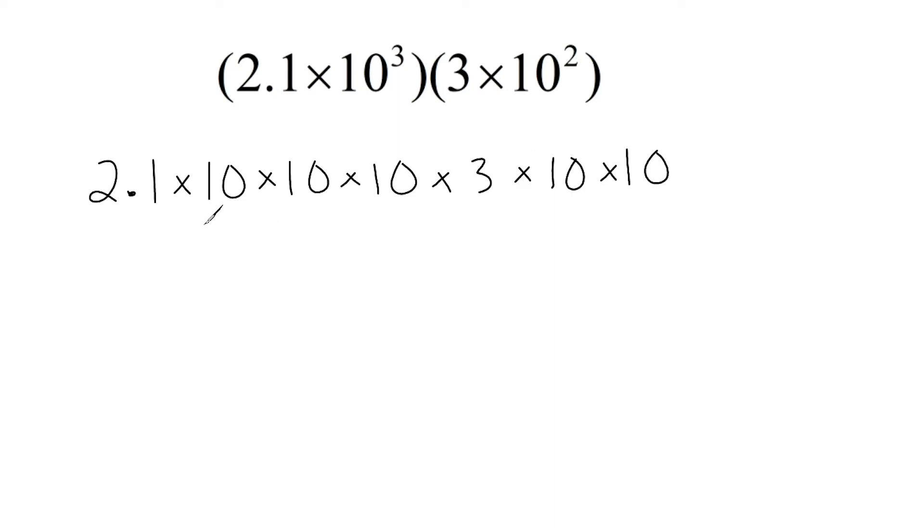Now, if you take a look, we can see in all, we are multiplying a total of five tens. That's why we can simplify that as 10 to the fifth power. Or I could have just taken these exponents and have added them together like we did when we first shown the problem. And then we take 2.1 and multiply it by 3, which gives us a product of 6.3. So 6.3 times 10 to the fifth power is the answer here.